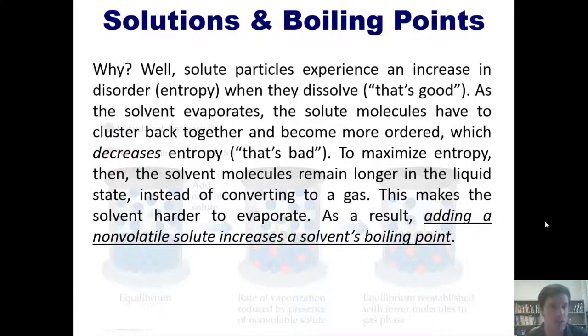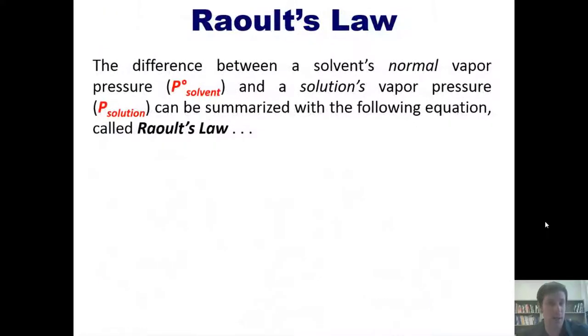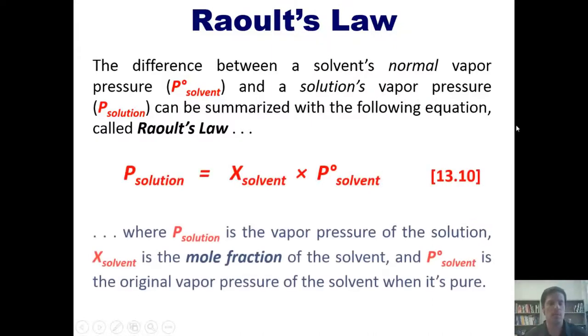That now brings us to Raoult's law. The difference between a solvent's normal vapor pressure, which we can define as P°(solvent), and the solution's vapor pressure, P(solution), can be summarized using the following equation called Raoult's law: P(solution) = X(solvent) × P°(solvent), where X(solvent) is the mole fraction of the solvent.